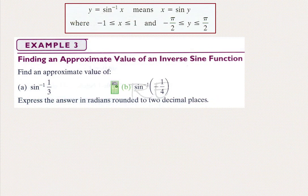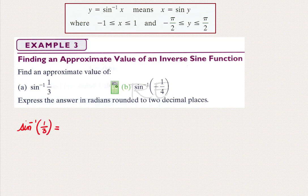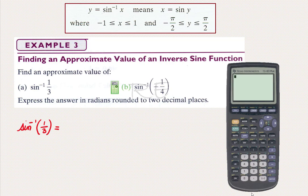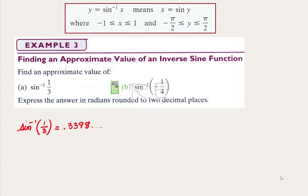If x is between negative 1 and 1, then we can get the inverse sine of x. If it doesn't represent a special angle, we will use the calculator to get an approximation. The inverse sine of 1/3, using the calculator, make sure it's in radian mode. Inverse sine is second function sine, and 1 divided by 3, and then enter. So, 0.3398 to 2 decimal places is approximately 0.34.